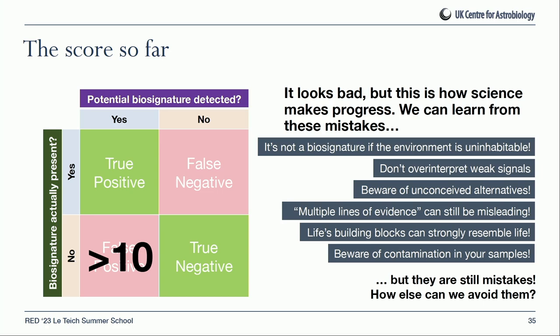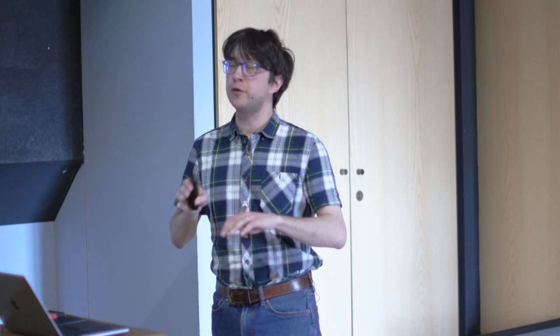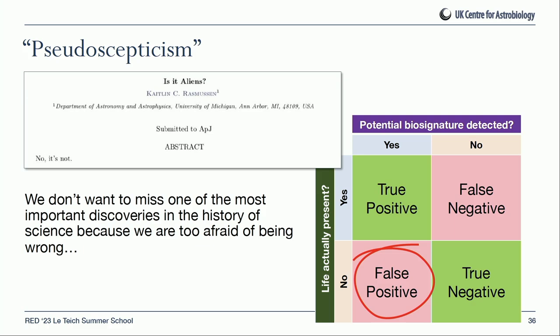Science of course learns by making mistakes — that's good and proper, but they're still mistakes. I don't want to say we should just be extremely skeptical about any claim of extraterrestrial life. Some people say 'it's never aliens, forget about it' — there's a comic abstract with the title 'Is It Aliens?' and abstract 'No,' which is funny but maybe not the most scientific approach. If we always take this attitude, we risk false negatives and missing what could be one of the great discoveries in the history of science.